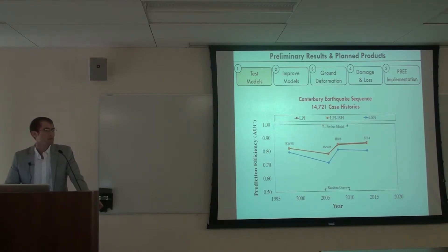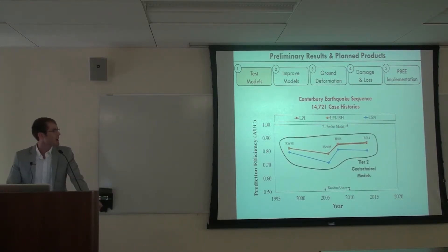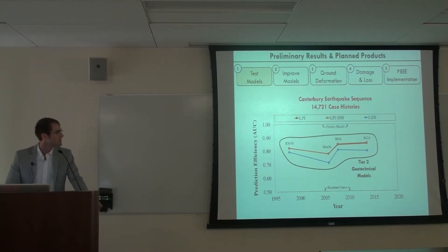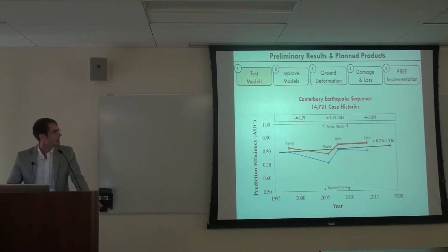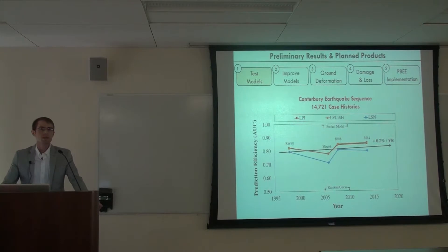Looking at the Christchurch data: these are tier-two geotechnical models — triggering models used in series with manifestation models — plotted in the order they were proposed so we can see how things change over time. On the y-axis is the area under the ROC curve, a popular metric for quantifying classifier systems. These relatively sophisticated, moderately expensive models appear to plateau, and drawing a trend line suggests we're not improving too quickly, which implies we may need something more disruptive to see dramatic improvement.